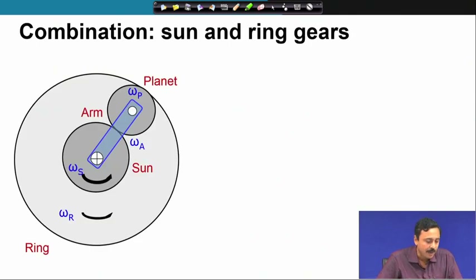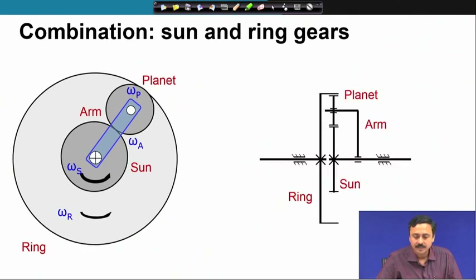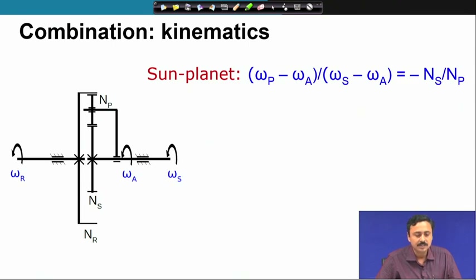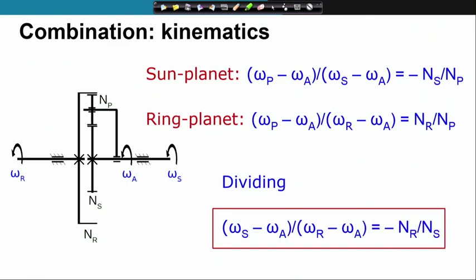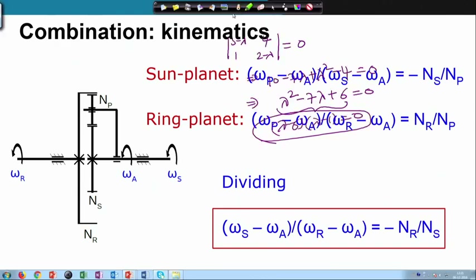Let us recapitulate what we discussed in the kinematics of epicyclic gear trains with sun and ring gears. This is the relation for the sun-planet system, and this is the ring-planet combination. If you divide one by the other, you get the relation between omega sun, omega of the arm, and omega of the ring in terms of the number of teeth on the ring and the sun.